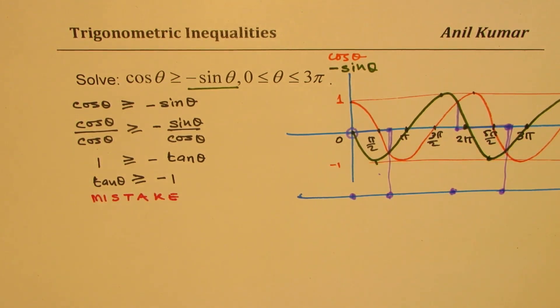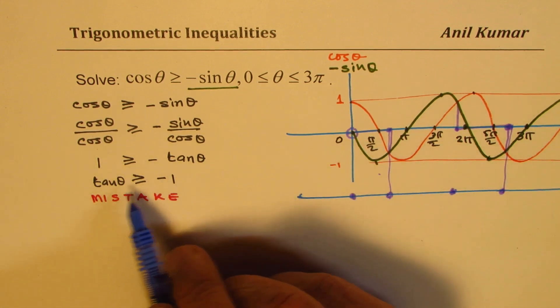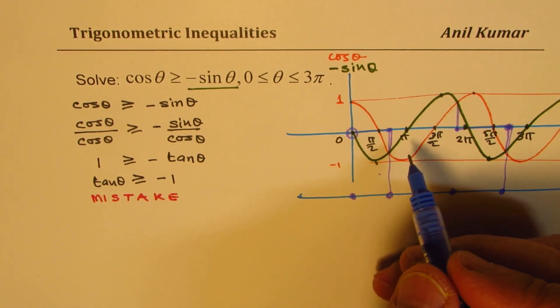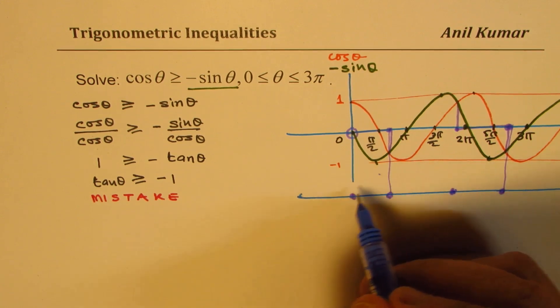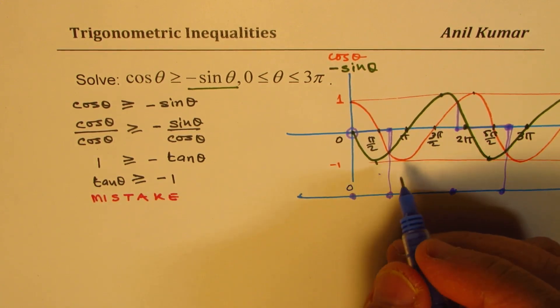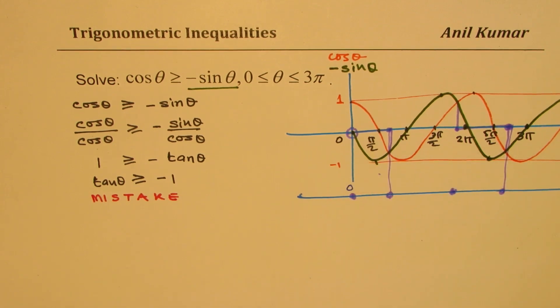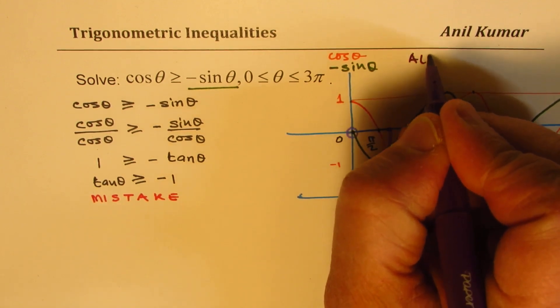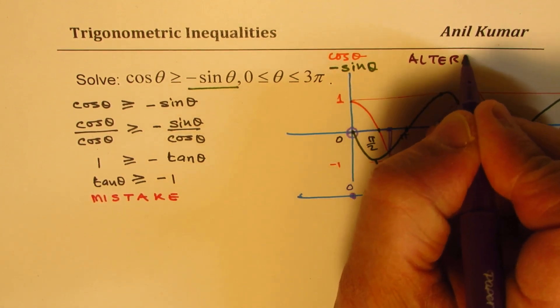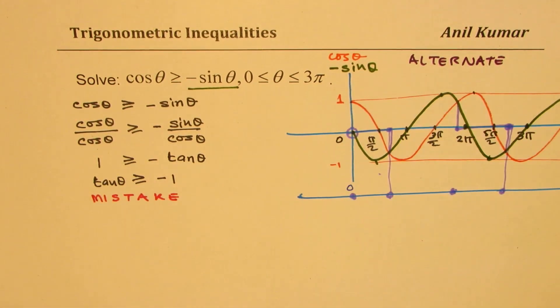What are these solutions? Well, you know tan θ is -1, so definitely it's related with π/4. Now let's get back to the original solution. So this is our alternate solution. We could solve this question both ways, and it's very important to understand the concept.